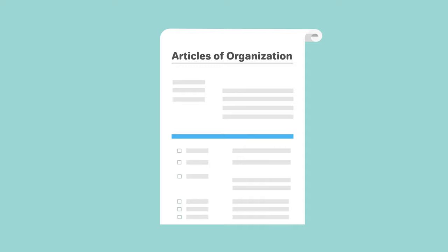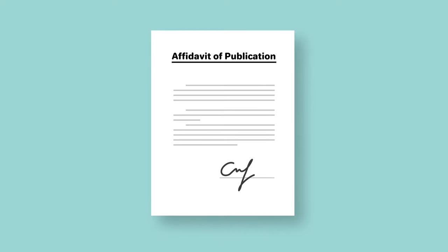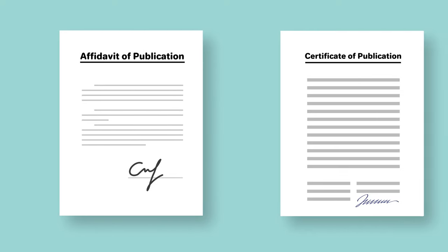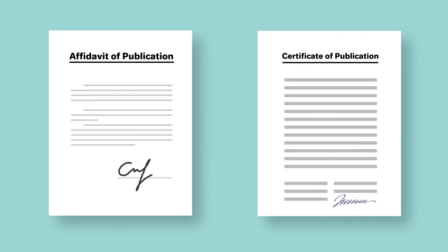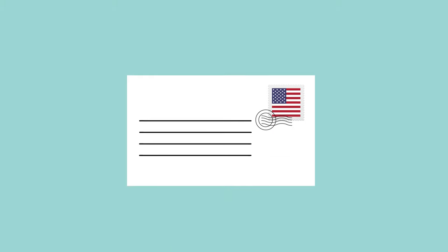After publication, the printer or publisher of each newspaper will provide you with an affidavit of publication. You must submit your certification of publication along with your affidavits of publication to the New York Department of State, Division of Corporations. After the publishing requirements are met, you can change the location of your principal office to anywhere in New York State. You do not need to publish additional notices.